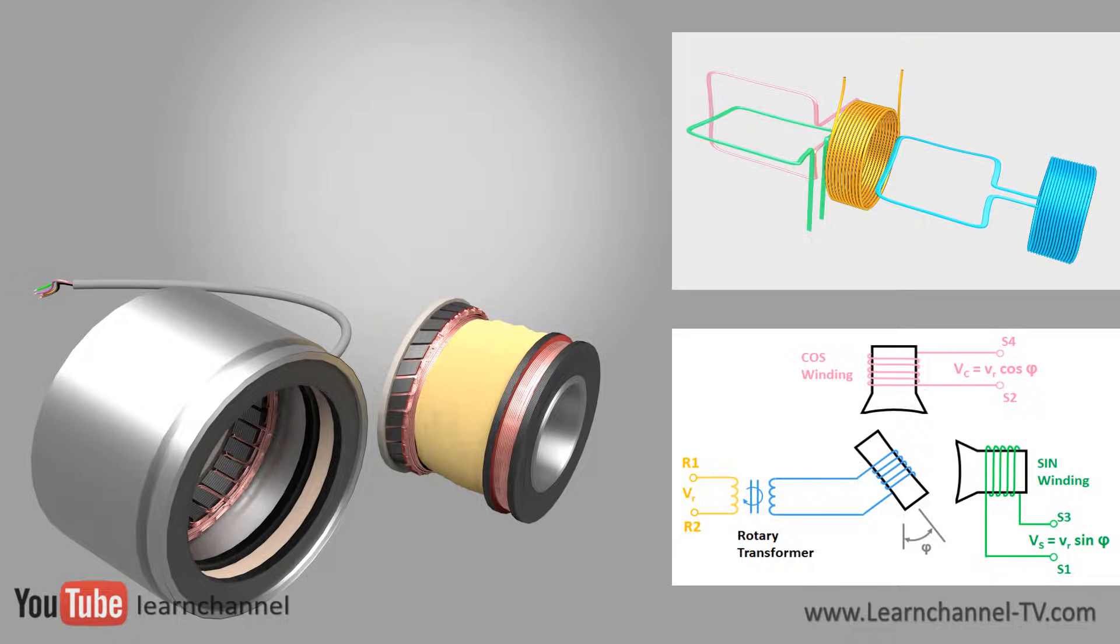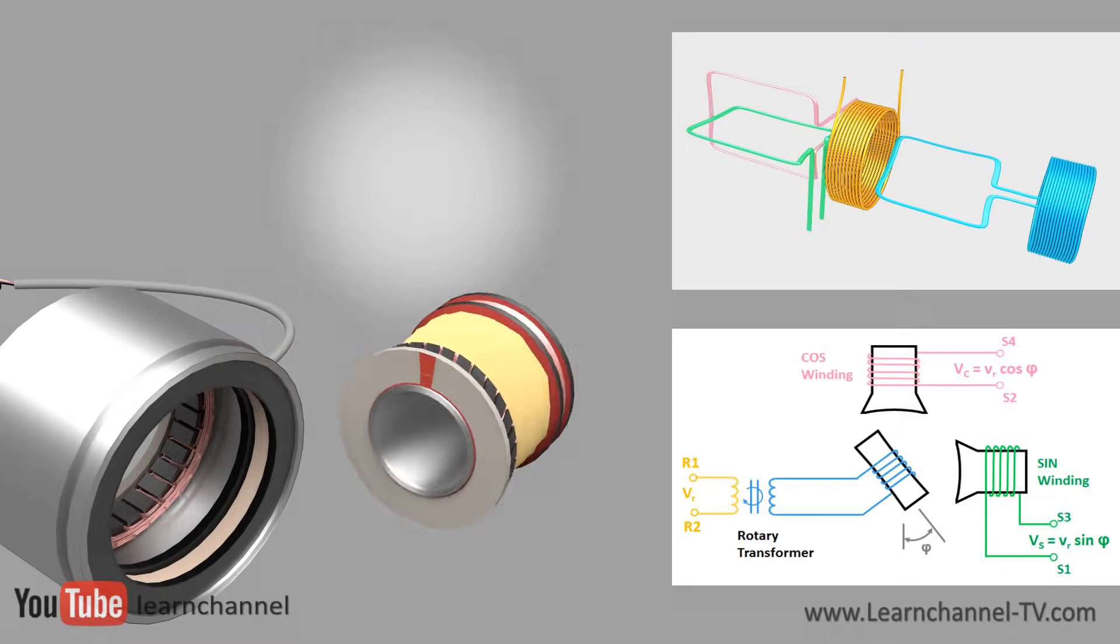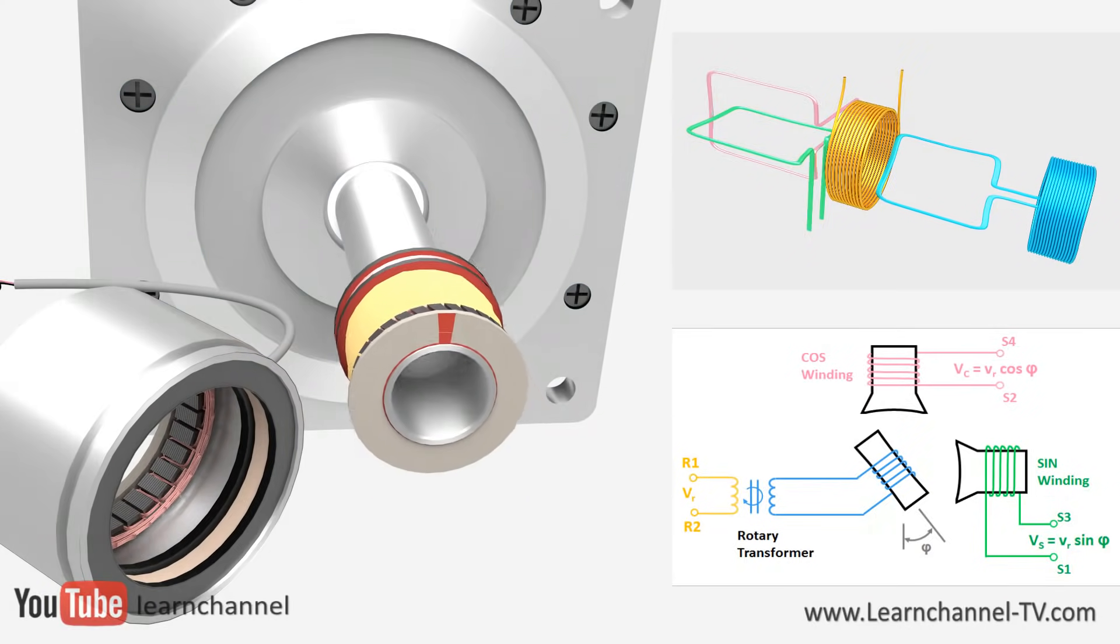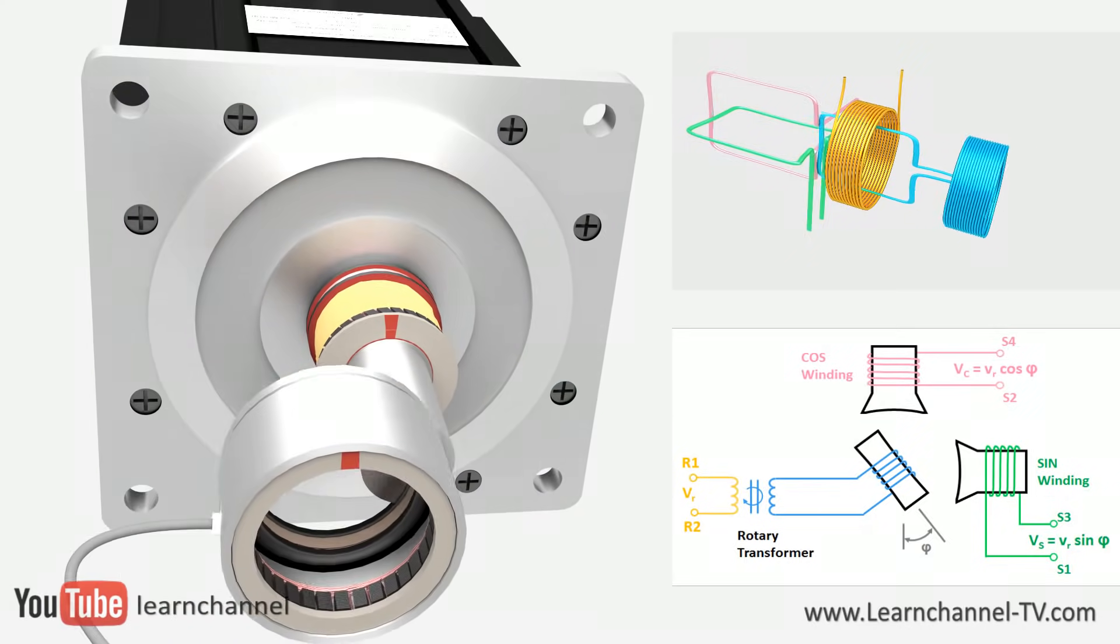To get an output signal, we have two secondary stator windings, a so-called sine and a cosine winding, which are displaced angularly to each other by 90 degrees.